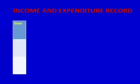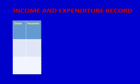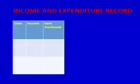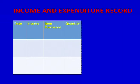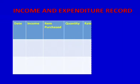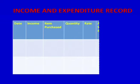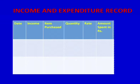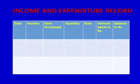Income and expenditure can be recorded as shown in this table. We have to record the date, the income, total income, item to be purchased, quantity of the item to be purchased, the rate, amount spent in rupees, and total balance in rupees.